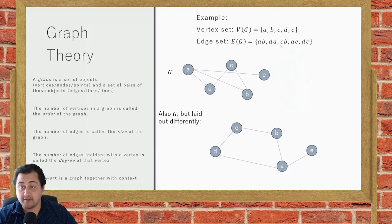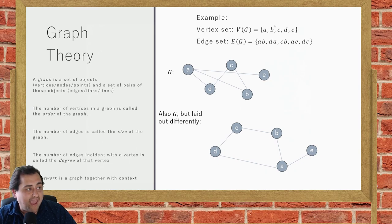So that's all a graph is, but it's really easily visualized. A convenient visualization is to draw a circle or point for each object, and to connect pairs of those objects with a line segment if they are in the edge set. So here is this graph G.